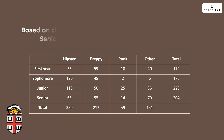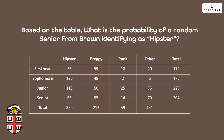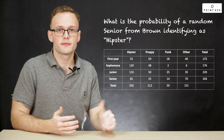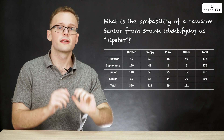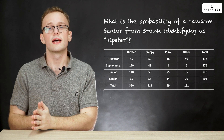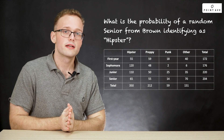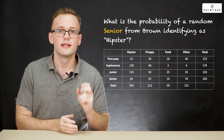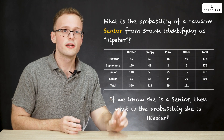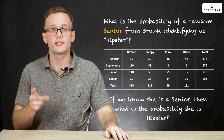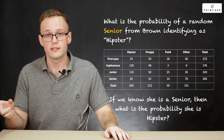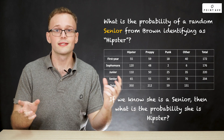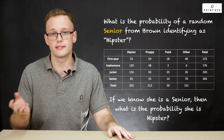Based on the table, what is the probability of a random senior from Brown identifying as hipster? This is the same problem we did last week, except now instead of choosing a random student and asking the probability that they are hipster, we are choosing someone we know is a senior and asking: if we know she is a senior, what then is the probability that she is hipster? So you see how this is a conditional probability.